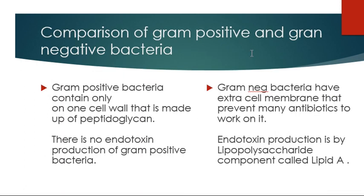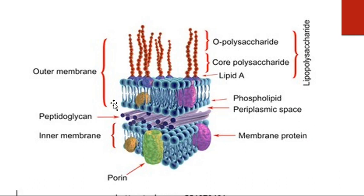In comparison: gram-positive bacteria contain only one cell wall made of peptidoglycan, whereas gram-negative bacteria have an extra outer cell membrane that prevents many antibiotics from working. Gram-positive bacteria do not produce endotoxin, but gram-negative bacteria do produce endotoxin. In the gram-negative structure, we can see the inner cytoplasmic membrane, the peptidoglycan layer, and the outer membrane — which is present in gram-negative but not in gram-positive bacteria.